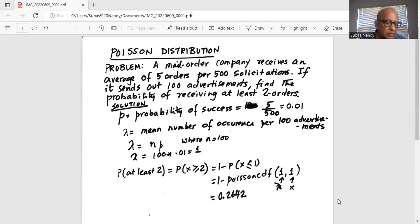So Poisson CDF, my lambda value is 1, my x value is also 1. So in the parenthesis, Poisson CDF 1, 1. First one is the lambda value, second one is the x value. I'm adding from 0 to 1.